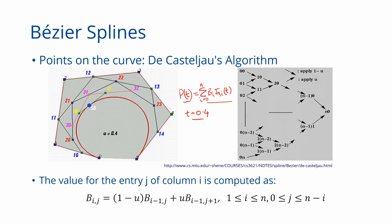Another way of evaluating the curve is by using de Casteljau's algorithm. In this algorithm, the variable u is used instead of t — it is the same thing. Here is an example of a Bezier curve with control points 0, 1, 2, 3, 4, 5 — so this is a degree-5 Bezier curve — and we want to evaluate the point at t = 0.4.